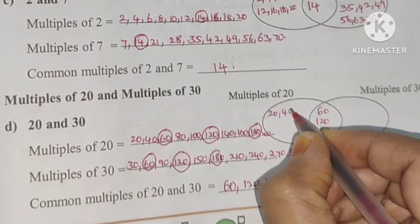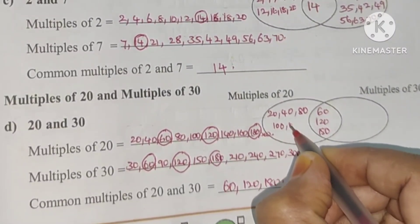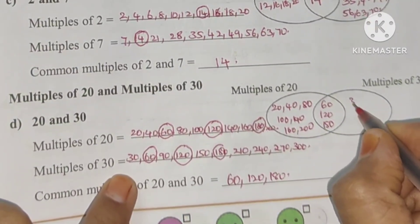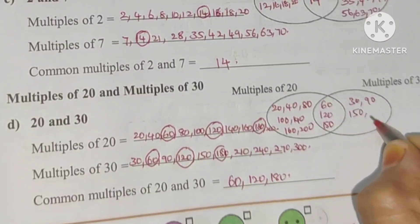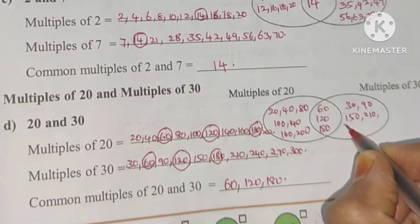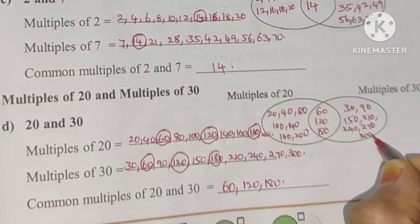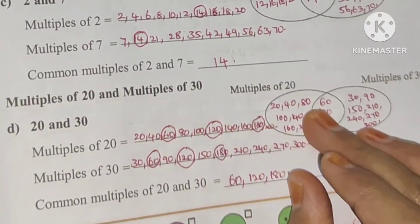We will write: 20, 40, 80, 100, 140, 160, 200. Here 30, 90, 150, 210, 240, 270, 300. So students, this is how we find the multiples.